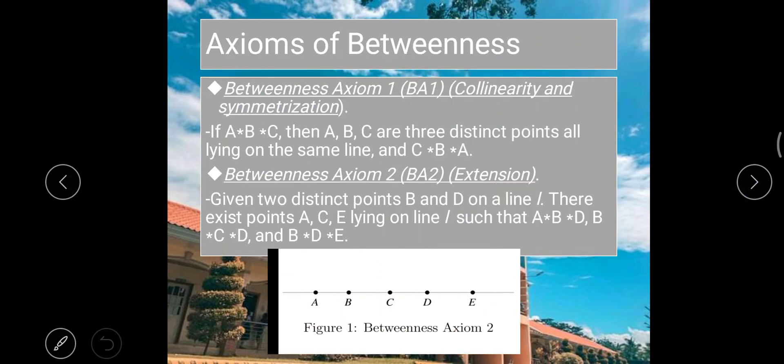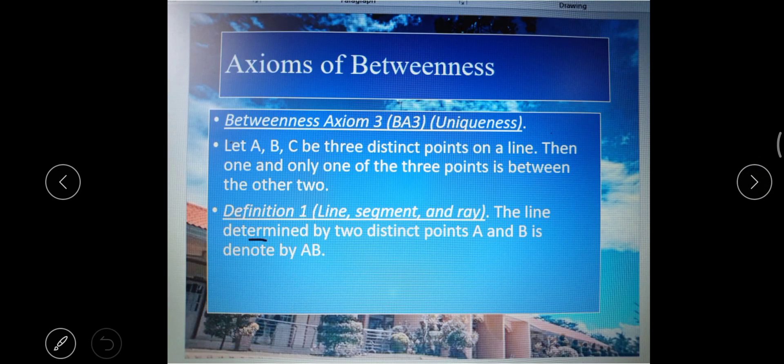Going back to the first axiom — it makes the obvious remark that 'B between A and C' means the same as 'B between C and A.' It doesn't matter whether A or C is mentioned first.